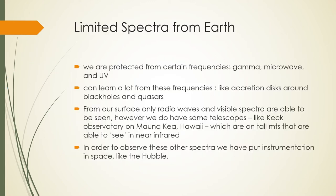Gamma and X-ray radiation are actually blocked from us by our atmosphere, and much of UV is too. From Earth we are limited in what we can see of the spectrum — we are protected from gamma, microwave, and UV frequencies. But we can learn a lot from these frequencies, like accretion disks around black holes and quasars. From the surface, only radio waves and the visible spectrum are observable. Some telescopes, like the Keck Observatory on Mauna Kea, Hawaii, are on tall mountains that allow them to see in near-infrared.